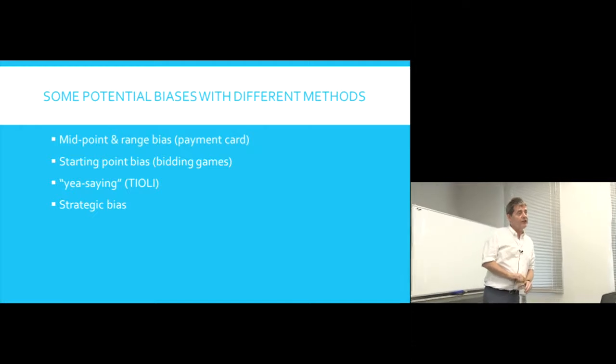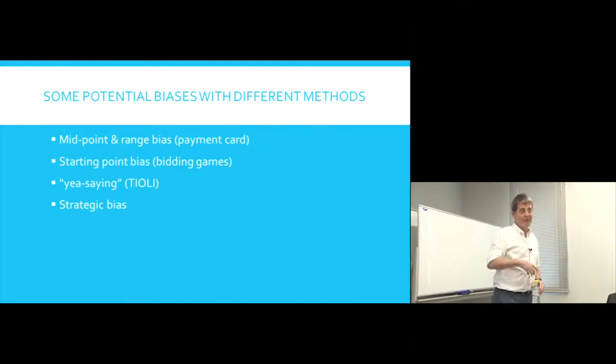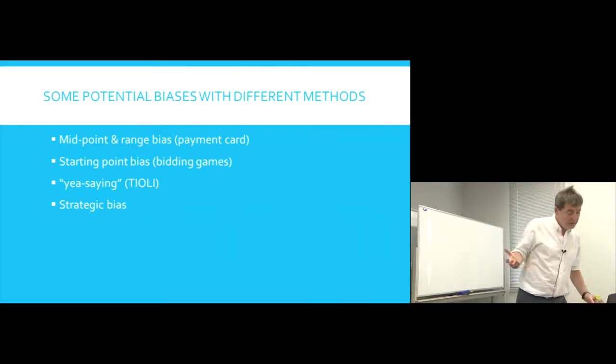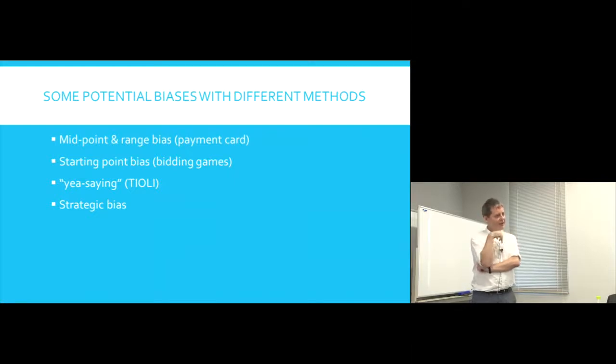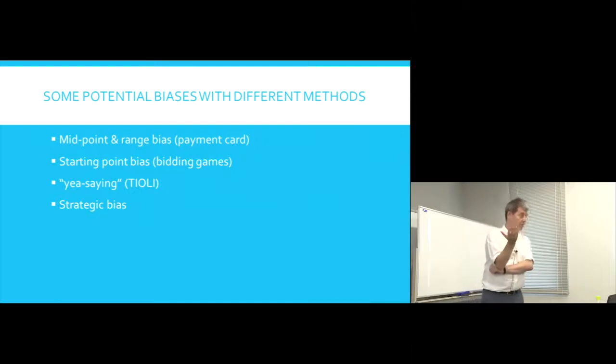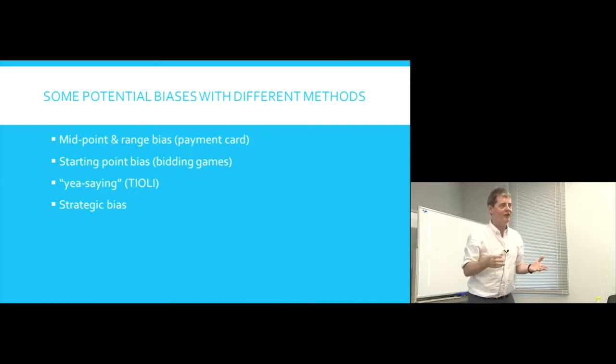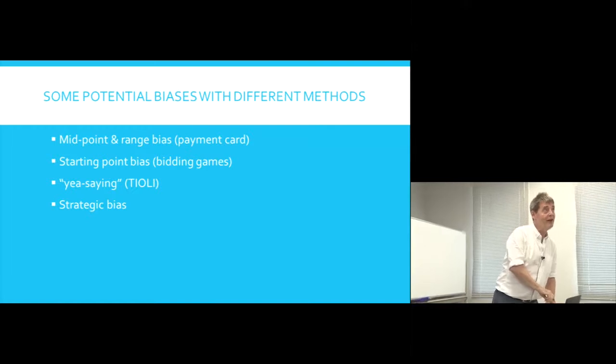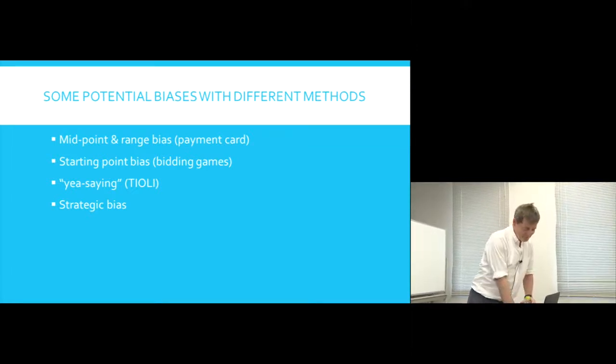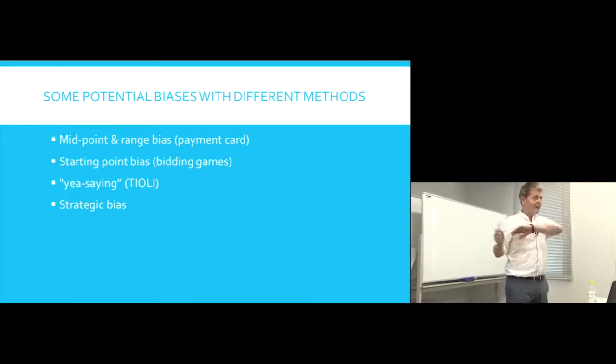Final one on this list, strategic bias. This describes a situation where people think they can change the outcome through their answer. For example, in the community-based health insurance, people might think, well look, if I really give my true value, I might have to pay this. Whereas if I come in low with a low valuation, it's less likely that I'll have to pay so much as possible. Or people might think the other way. They might think that if I give quite a low valuation, it may never be on offer. But if I give a high valuation, they may bring it in. So there's these things. And again, this has been tested. There's a very famous study in Sweden to do with comedy programs, but that takes me too far away.